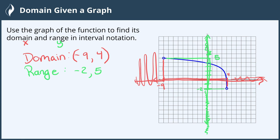And again these are open circles, so I can't include the negative 2 or the positive 5, so use parentheses. And we have now found the domain and the range of this graph in interval notation.